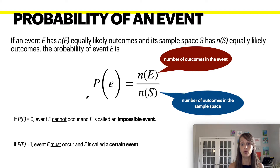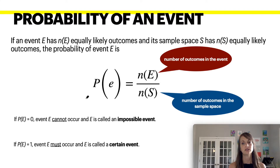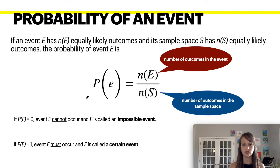A probability of one means it will occur 100% of the time. For example, what's the probability of getting a heads or a tails from a coin flip? That's 100% of the time, because when you flip a coin you will always get heads or tails — which means it is certain to happen.